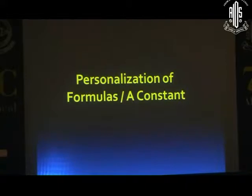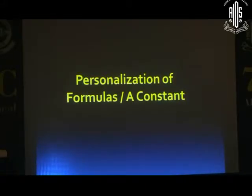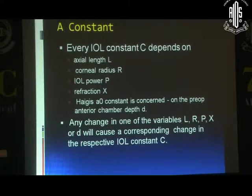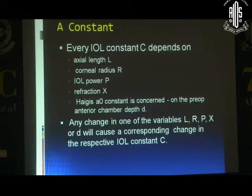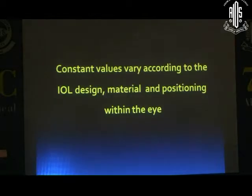How do we do it? Personalization of the A constant — do we really need it or is it just a hype? The A constant depends upon the actual length of the eye, corneal radius, IOL power, refraction, and in the Haigis formula, they also consider the pre-op anterior chamber depth. Any change in axial length, corneal radius, power, refraction, or depth can change the A constant. Constant values vary according to the IOL design, material, and positioning within the eye as well.